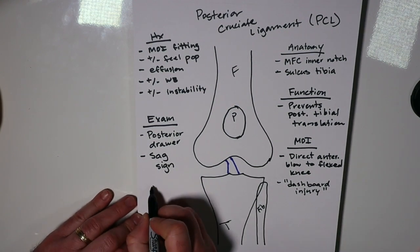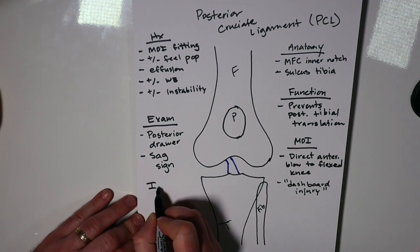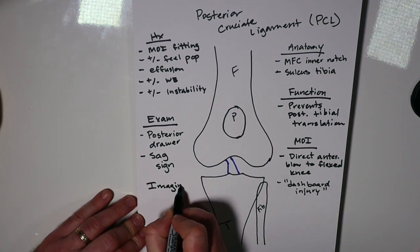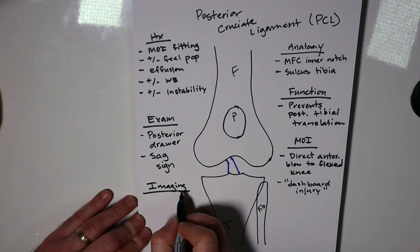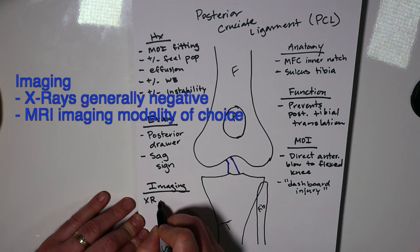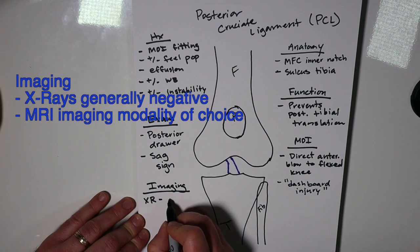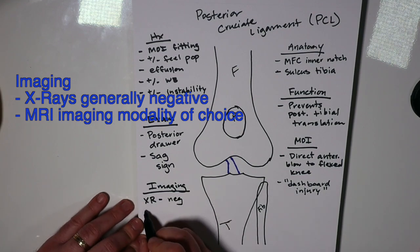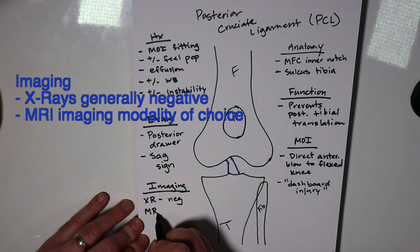For imaging: X-rays are generally negative, but you need to get them to rule out other potential injury. The imaging study of choice for PCL injuries is the MRI.